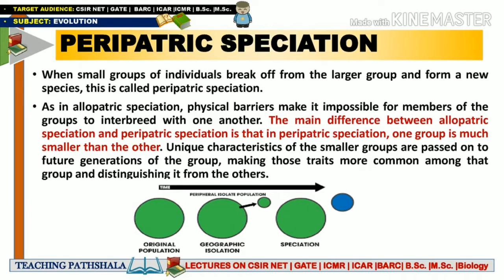At this stage, I'm expecting that you know the meaning of speciation — the generation of a new species — as I have already described this concept in a previous video. Now, the second type of speciation is peripatric speciation. This is a special case or type of allopatric speciation because it also involves a physical or geographical barrier.